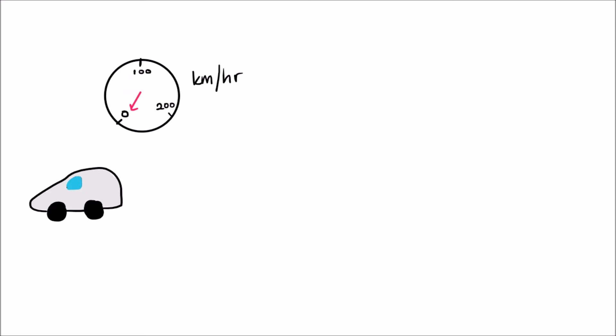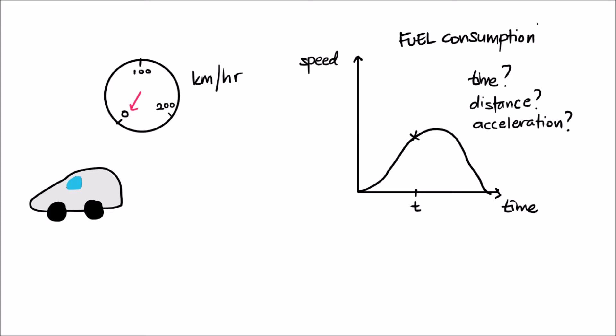If I can draw my speed on the graph, it might look something like this. Now, with this information, can I know my speed at this point of time? Or my distance? Or my acceleration? Or if you have more information, you can ask how much fuel I am using.